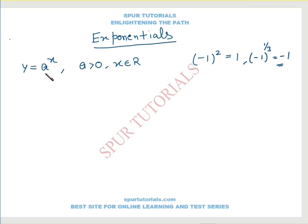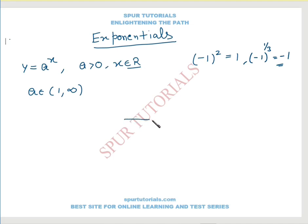y equals a raised to power x is an exponential function where a is greater than 0 and x belongs to the reals. For a greater than 0, we have 3 cases. The first case is a belongs to 1 to infinity — this is the most general case. If a belongs to 1 to infinity, then the graph for y equals a raised to power x shows exponential rise. This is for a greater than 1.